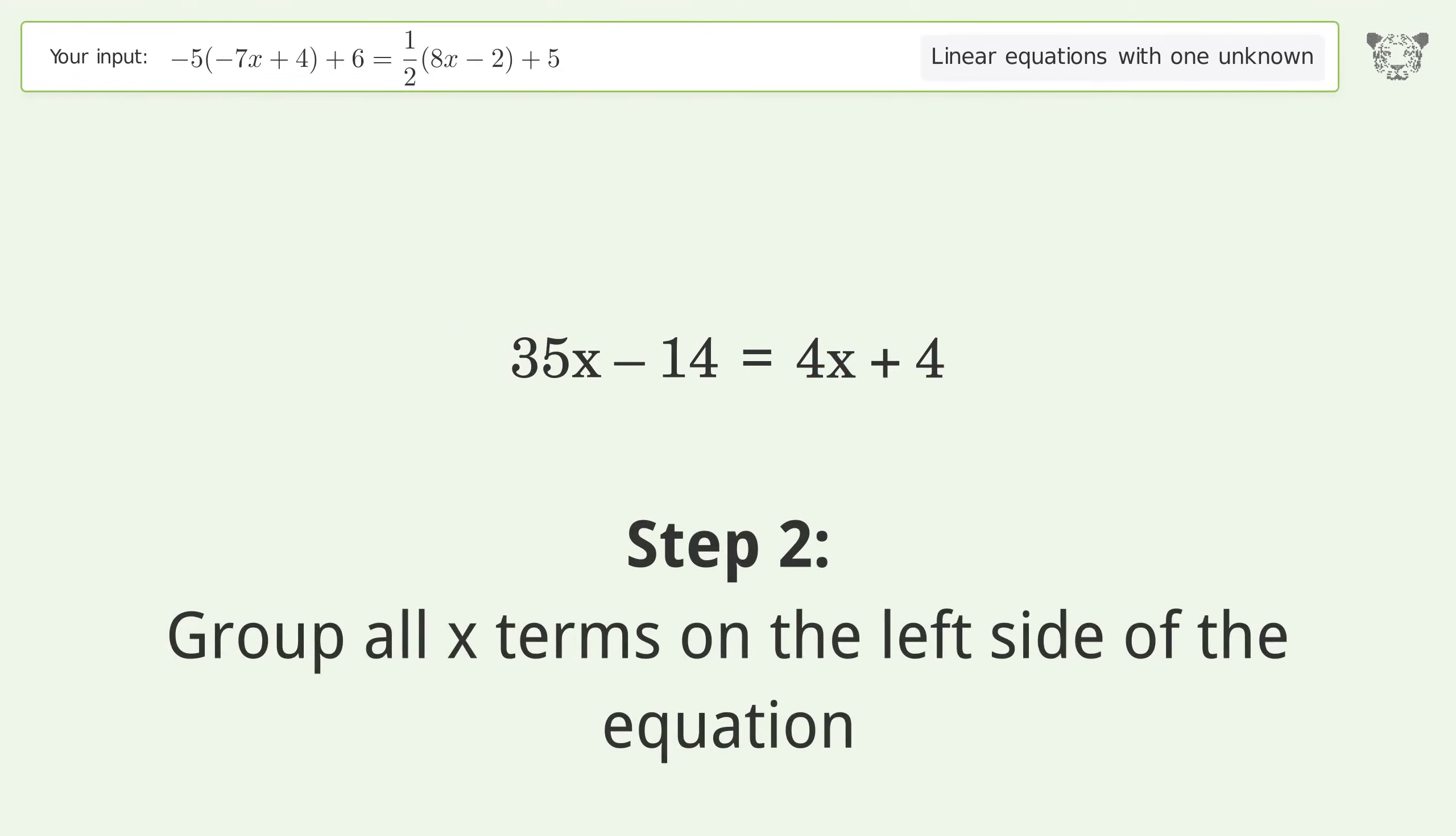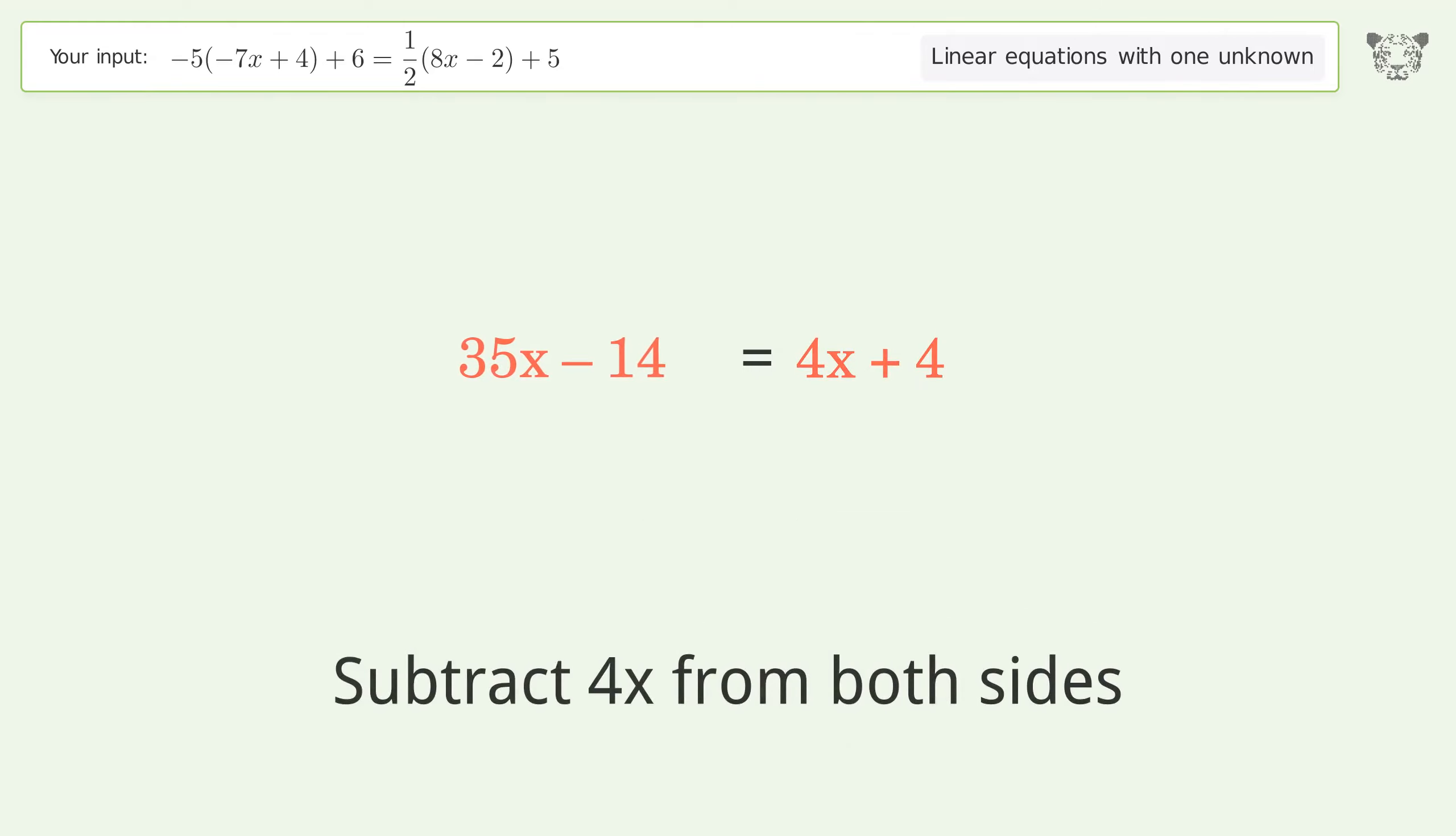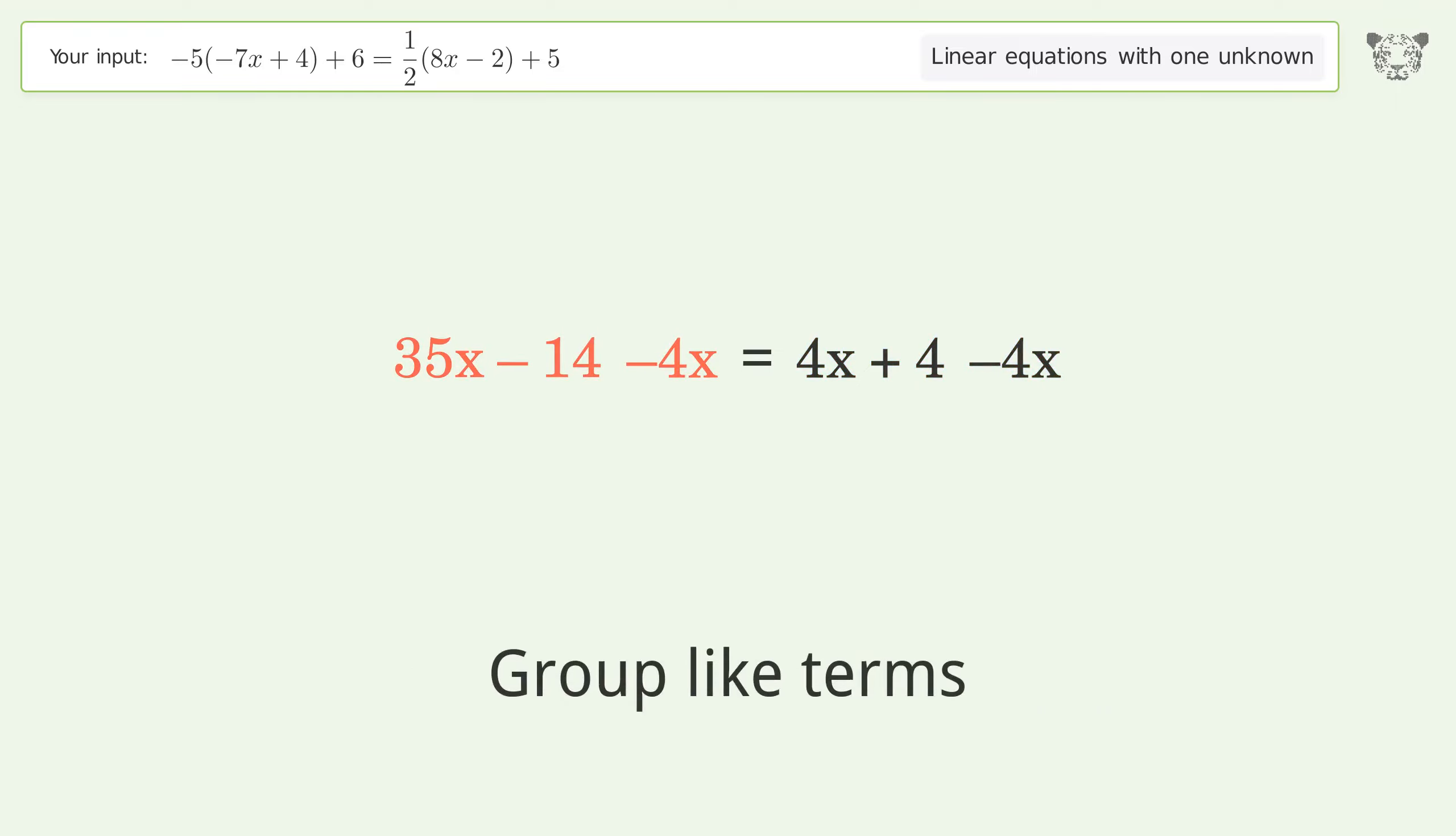Group all x terms on the left side of the equation. Subtract 4x from both sides. Group like terms. Simplify the arithmetic.